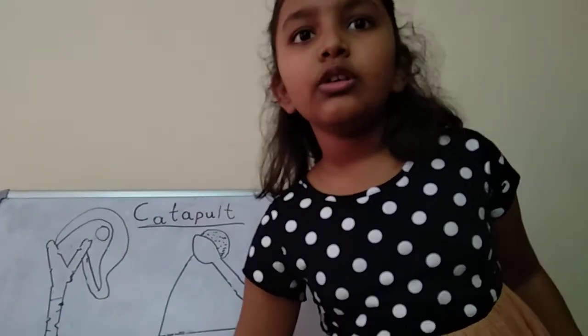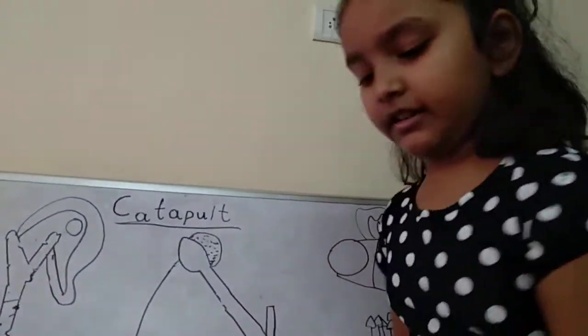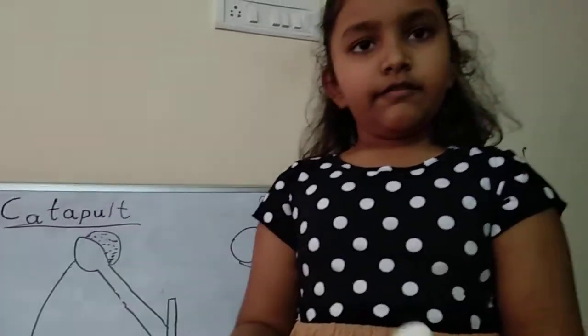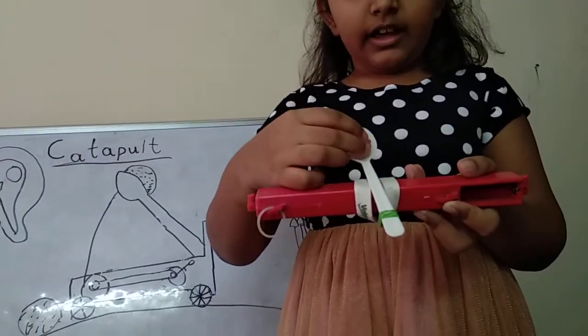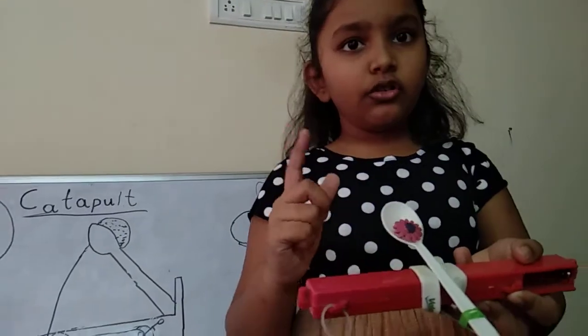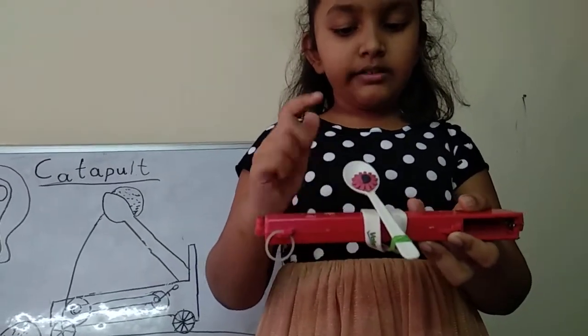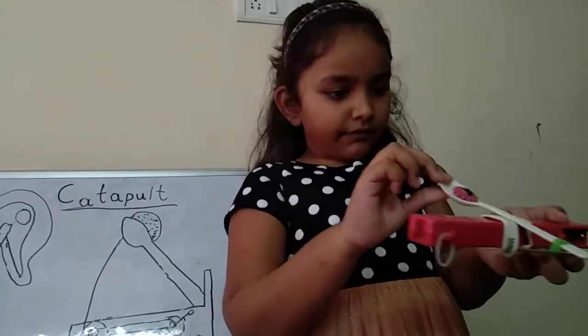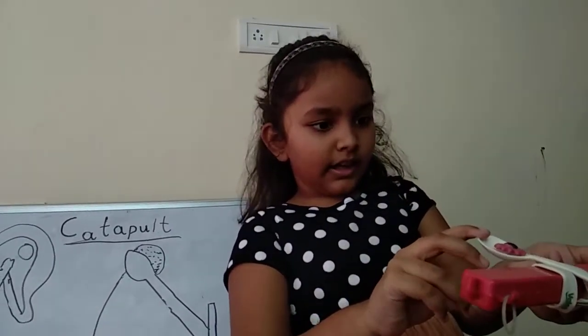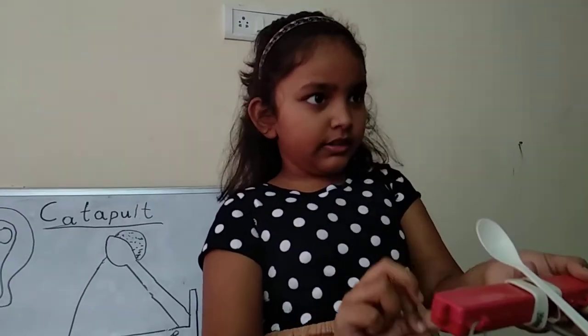After that, I'll show you how to use it. First, put an object here. It should be attached in the place where the spoon goes up. After that, pull it back and then shoot it.